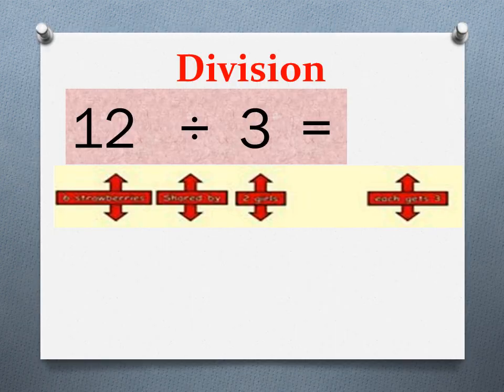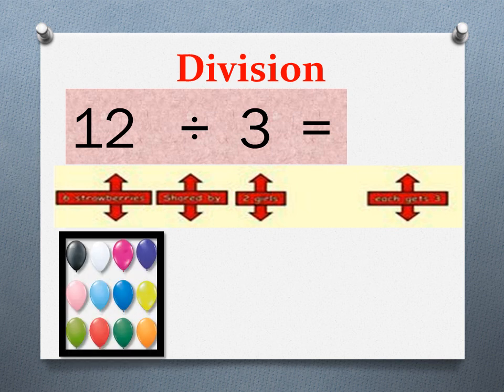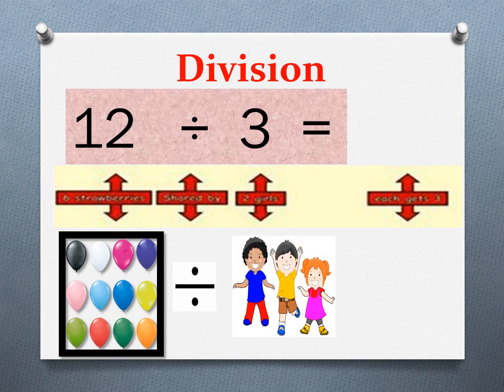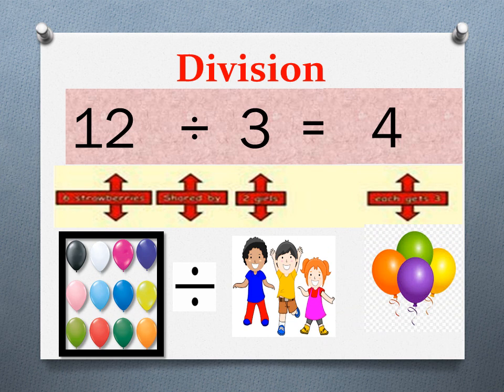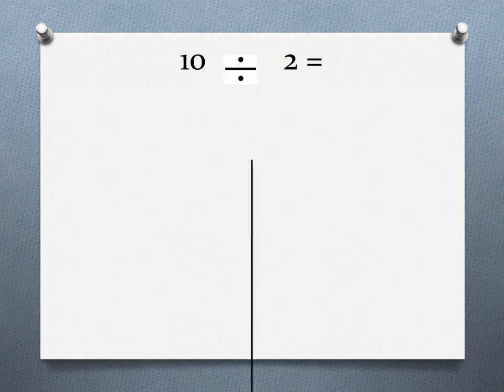Dear students, here is the next example of division. You have 12 balloons and you want to divide them between three children. Each child gets four balloons. Four is added three times to make 12, so you have 12 total balloons divided between three children, and each child gets four balloons.